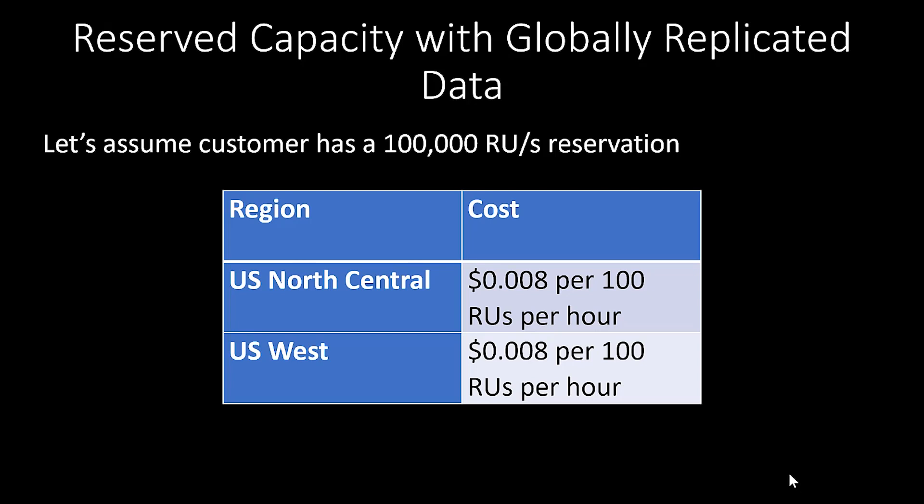One feature of Cosmos DB that makes it stand out is that it's the most globally replicated database in the world. Now, different Azure databases have slightly different costs for each request unit. This does not change how you will purchase your Azure Cosmos DB reserve capacity reservation, but it does change how some of your reservation costs will be attributed to each bill. Let's go through a few examples of this. Let's assume this customer has purchased a 100,000 RU reservation — this is the smallest amount of RUs you can purchase for reservation, providing approximately 20% savings for one year and 30% savings for a three-year commitment.